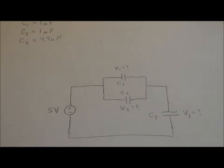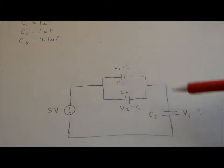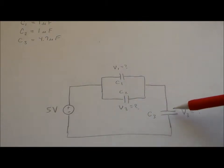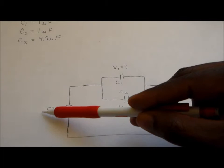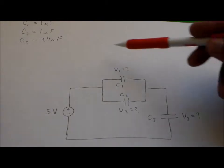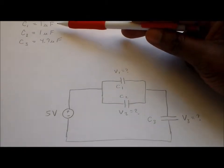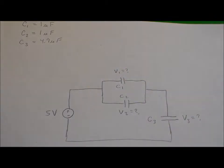You've been asked to find the voltages across three capacitors in a combinatorial circuit. We call it a combinatorial circuit because two capacitors happen to be in parallel with each other, and those two capacitors together are in series with a third capacitor. You're trying to find the voltage across those three capacitors, which are in a circuit with a 5-volt voltage source. The capacitor values are 1 microfarad for capacitor 1, 1 microfarad for capacitor 2, and 4.7 microfarads for capacitor 3.